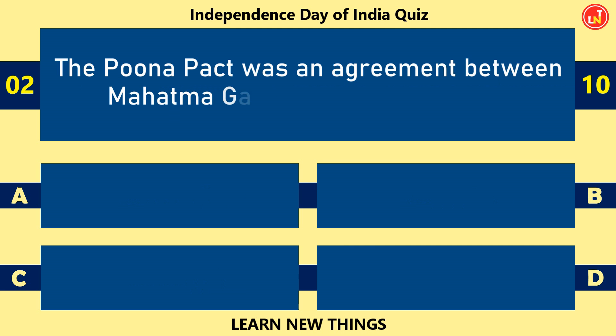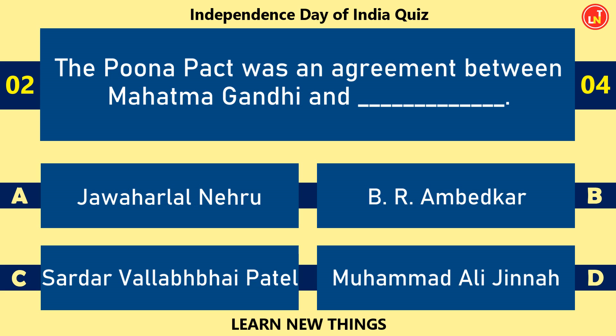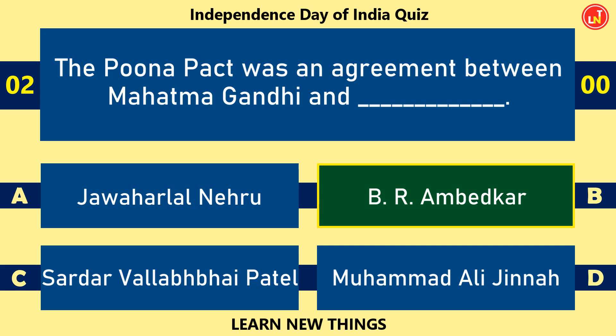The Poona Pact was an agreement between Mahatma Gandhi and B.R. Ambedkar.